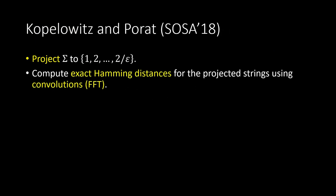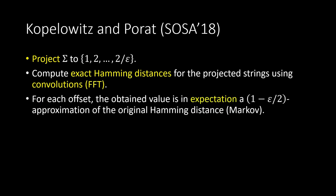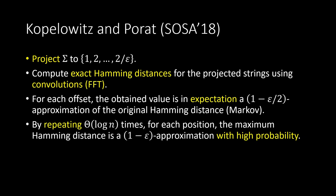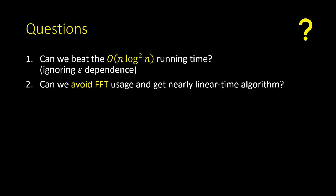Let's demonstrate this strategy with the algorithm of Koplovich and Porat. The algorithm first projects the alphabet to a small word of size 2/epsilon, then computes the exact Hamming distances for the projected strings with FFT. The claim is that for each offset the obtained value is in expectation a (1 - epsilon/2) approximation of the original Hamming distance, which is even better than needed. By repeating this process theta(log n) times and taking the maximum for each position, we achieve a (1 - epsilon) approximation with high probability.